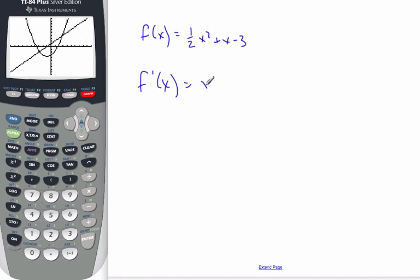We know f prime of x is equal to x plus 1. This line here is x plus 1. So that's using your TI to graph the derivative from a function.